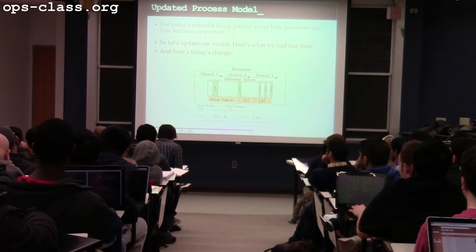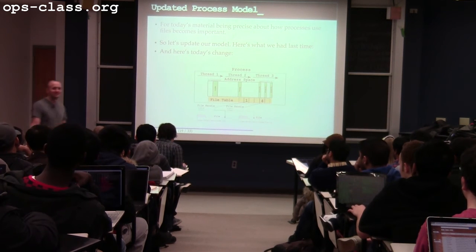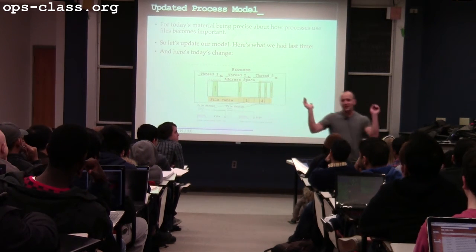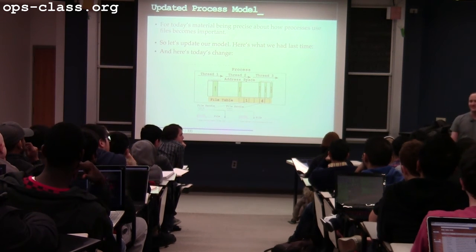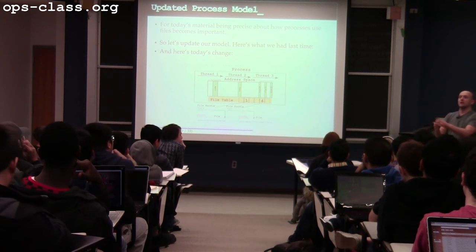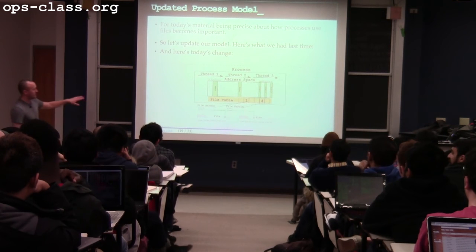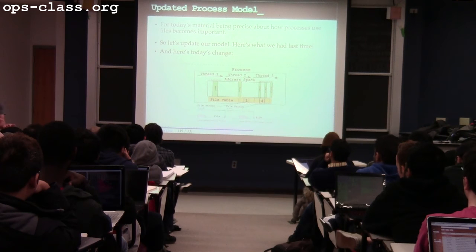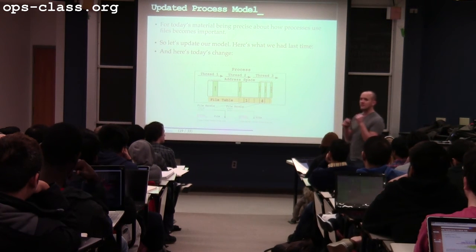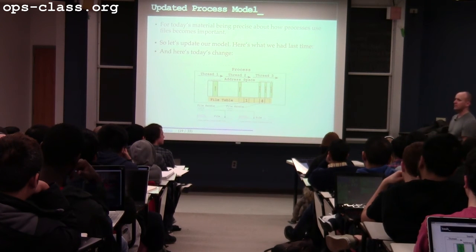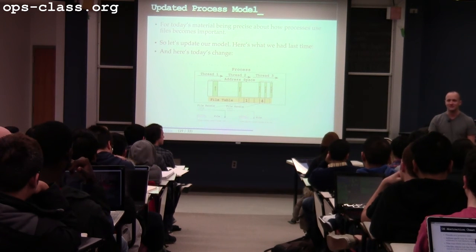When you call open, you get back a number. Later, if you want to read or write to the file, you pass that number back to the kernel, and the kernel says, 'I remember what file you want to use.' So open associates a number with a particular file and later operations use that number again. That number is an index into a static array — the file table.